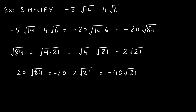Let's simplify: negative 5 times √14 multiplied by 4 times √6. We have one square root with a coefficient multiplied by another square root with a coefficient. Intuitively, we multiply the coefficients together: negative 5 times 4 gives us negative 20. Since both indices are square roots, we can place both 14 and 6 under a single radical — 14 times 6 is 84.